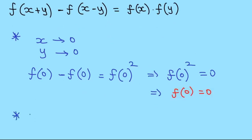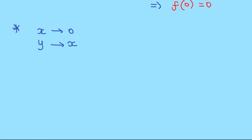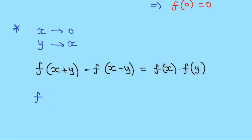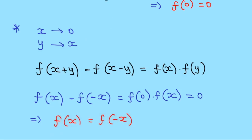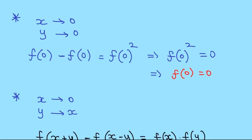The next observation: we assign x=0 and y=x. The original relation becomes f(0+x) - f(0-x) = f(0)·f(x), which simplifies to f(x) - f(-x) = 0·f(x) = 0. So f(x) = f(-x). This means f is an even function. So to find f for all values, we just need to find f(x) for positive values of x.